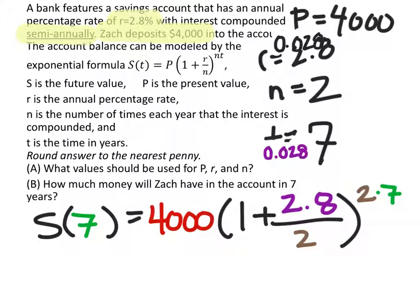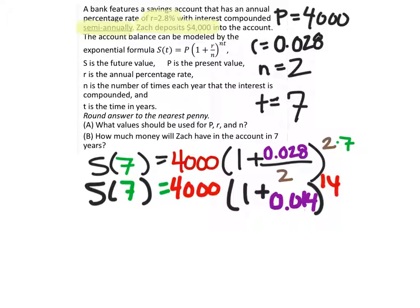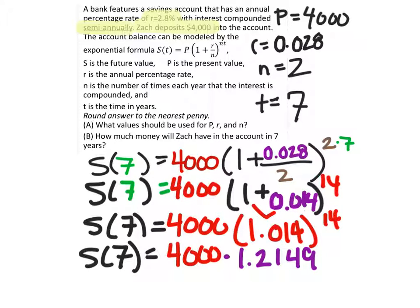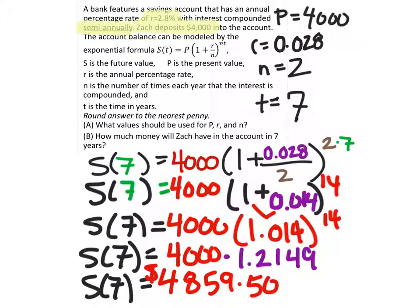So this is our new function: S of seven. The future value depending on seven years will be 4,000 times the quantity 1 plus 2.8 over 2, all raised to the power of 2 times 7. We have 4,000 times 1 plus 0.014, which is 1.014, raised to the power of 14. Then following order of operations, we compute 1.014 to the power of 14, rounded to the ten-thousandths place, and multiply that by 4,000. After seven years, Zach would have $4,859.50 based on an original deposit of $4,000.